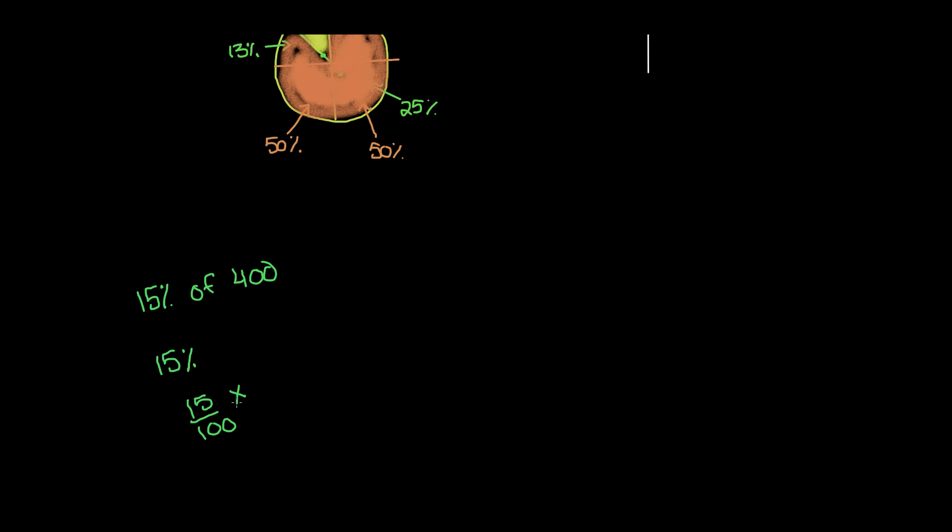And then since there's 15% of 400, we're going to be multiplying by 400. So 400 is actually a whole number. If you want, you can also put a 1 underneath it to make it into a fraction. So what we're going to be doing is simply multiplying. So 15 times 400 is going to give us 6,000. And then we know that 100 times 1 is 100. So remember to bring that 100 back.